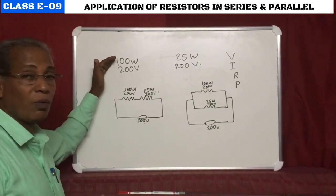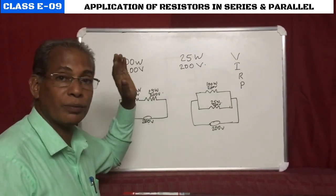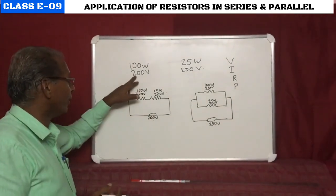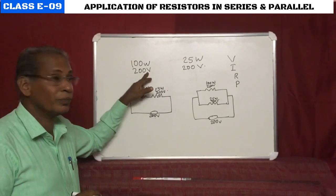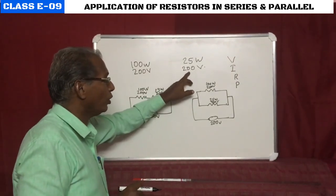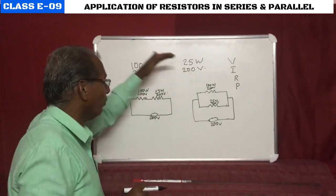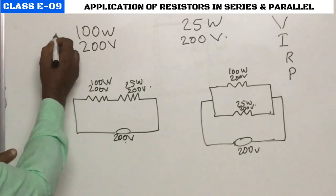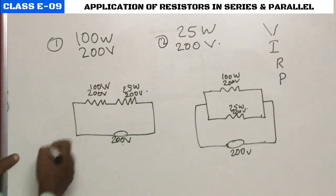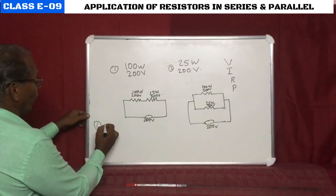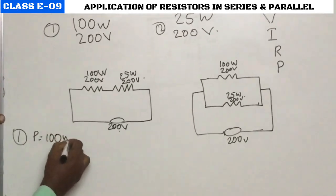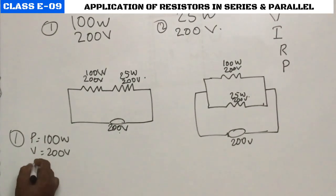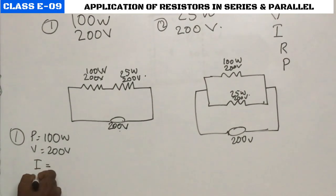We start with the meaning of the ratings: 100 watt, 200 volt means this bulb, when connected to 200 volts, gives a power of 100 watts. The 25 watt, 200 volt bulb, when connected to 200 volts, gives 25 watts. For bulb one (100W, 200V): power P = 100 W, voltage V = 200 V. From these we can calculate current and resistance.